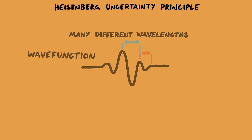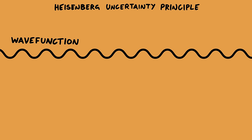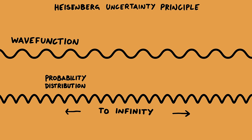But we can reduce that uncertainty. Let's have a wave that only has one wavelength, so a sine wave. Now we know the momentum exactly because the wavelength has a single value. But look at the position. There's an equal probability of the electron being found anywhere in the universe.